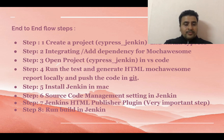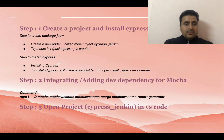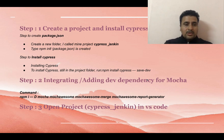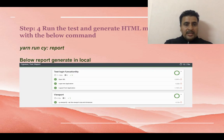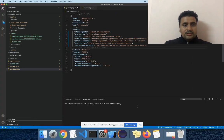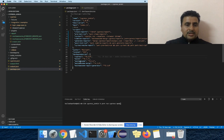In the first step, we have to create package.json using the npm init command, then install Cypress using the command npm install cypress. Then we have to add dependencies for mocha, mochawesome, mochawesome-merge, and mochawesome-report-generator. As I have done all these steps, let me showcase you — here you can see all the dependencies already added.